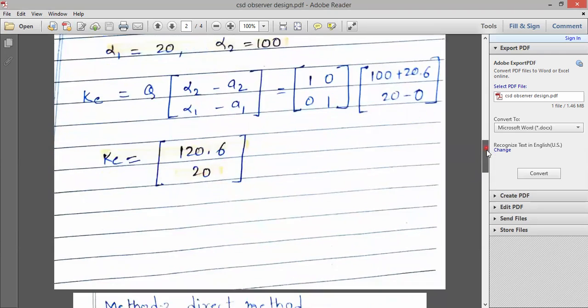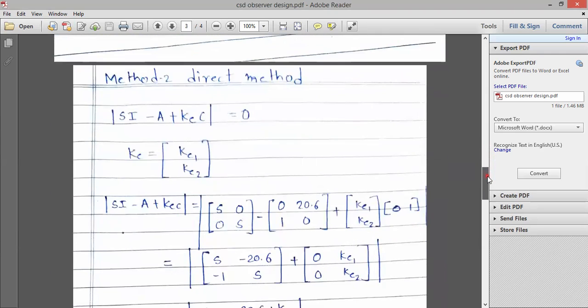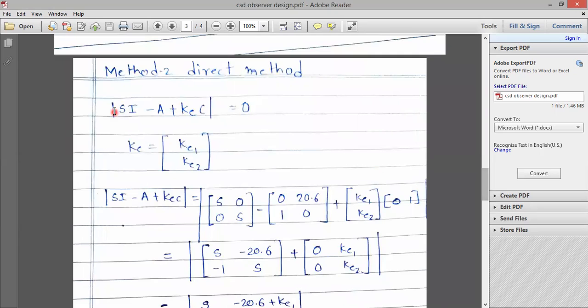Now, same example we solve using method 2, direct method. So for that we have to calculate SI minus A plus KE C matrix and get the determinant of that.